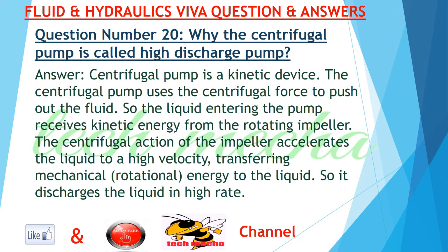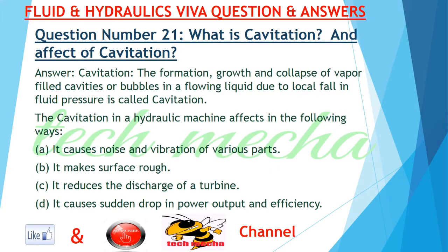Question number 20: Why is the centrifugal pump called a high discharge pump? Answer: Centrifugal pump is a kinetic device. The centrifugal pump uses centrifugal force to push out the fluid, so the liquid entering the pump receives kinetic energy from the rotating impeller. The centrifugal action of the impeller accelerates the liquid to a high velocity, transferring mechanical rotational energy to the liquid, so it discharges the liquid at a high rate.